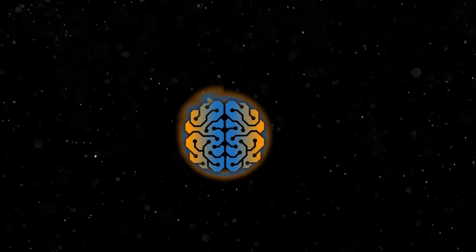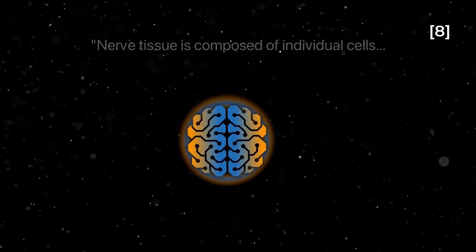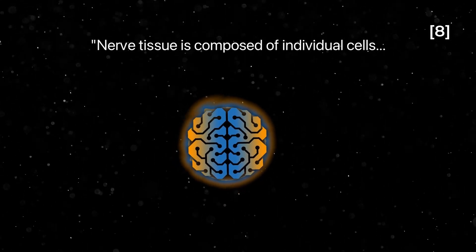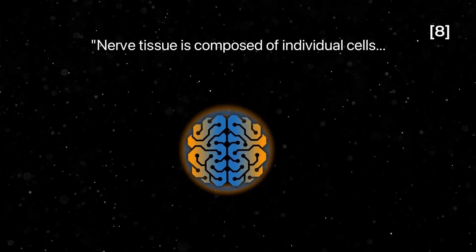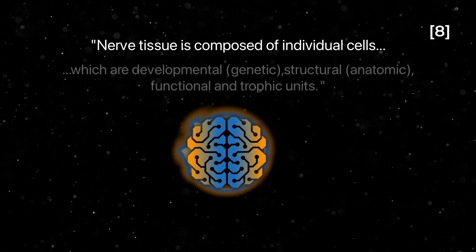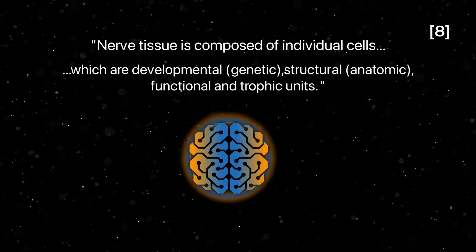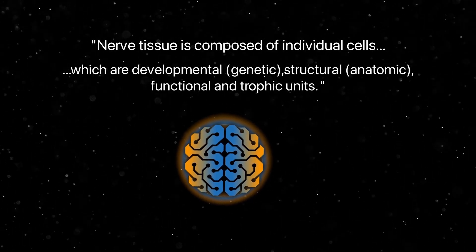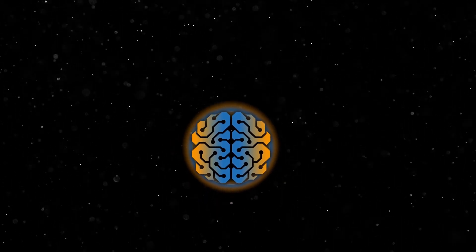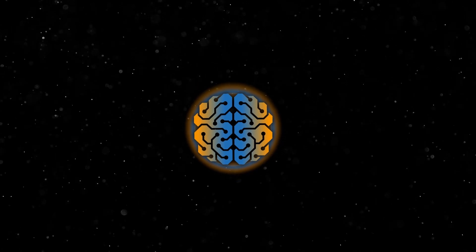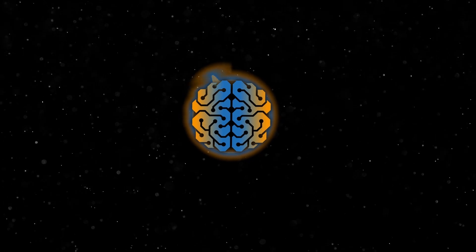But what exactly is the neuron theory? At its most fundamental level, this theory states that each neuron is its own individual cell, and that these cells contact each other at specialized junctions, called synapses. Furthermore, these cells formed developmental, structural, functional, and trophic units of the nervous system. Okay, I know that might have sounded like a lot of information thrown at you very quickly, so let's unpack it.